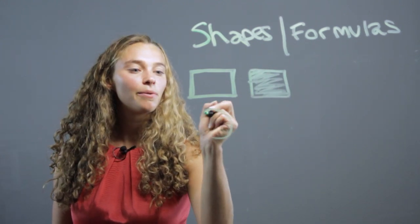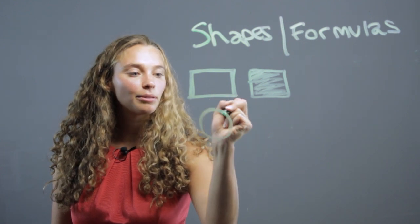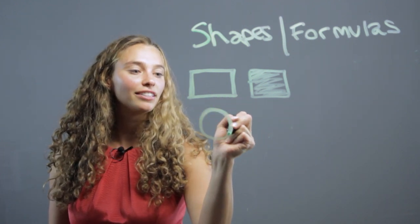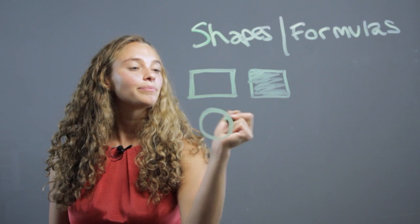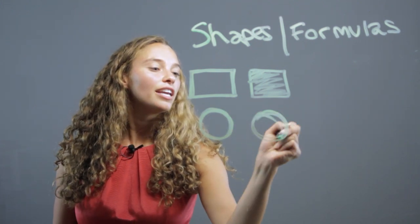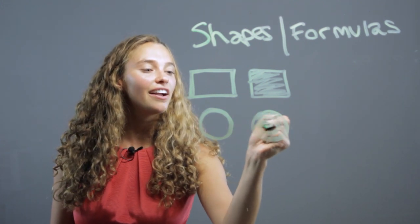Some will have circles where you can outline the circle, what we call the circumference, right? Or some can have enclosed circles for the area.